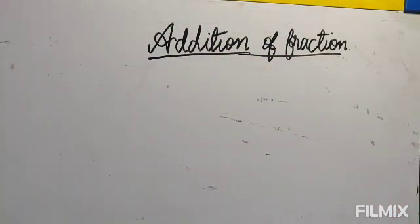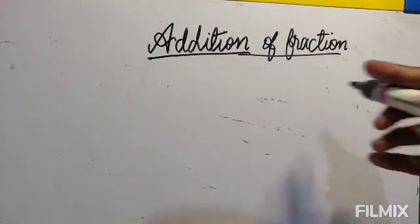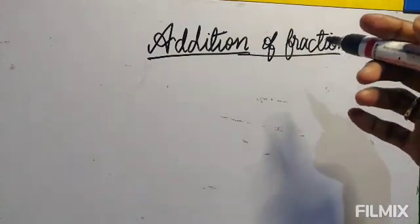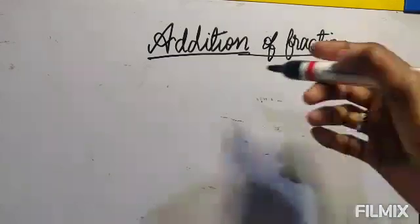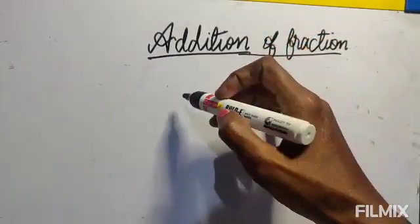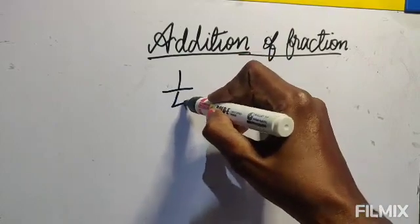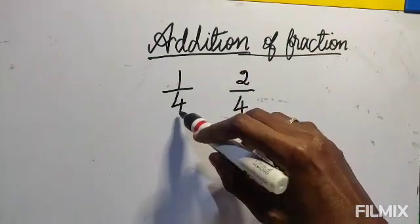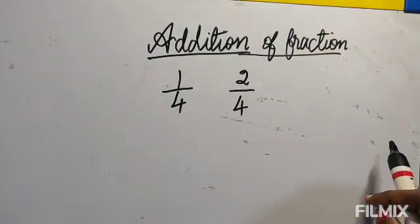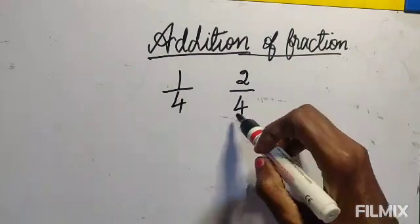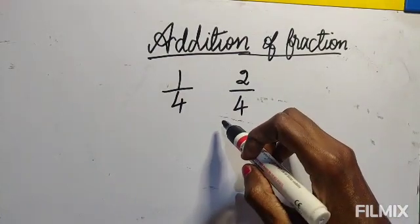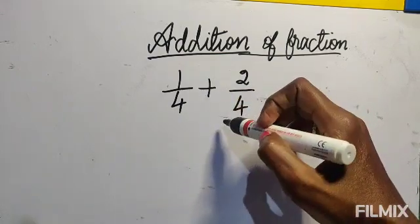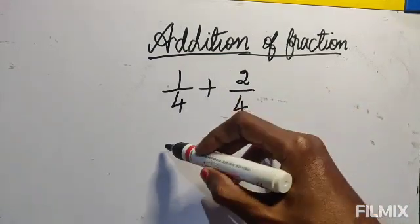Good morning children. Today we are going to see the addition of fractions. To add fractions, we need only like fractions — we cannot add unlike fractions. Like fractions means they will have the same denominator. So now these two are like fractions because they both have the same denominator. If they have a different denominator, you cannot add them.